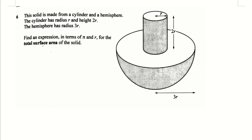Next, question number 6. This solid is made from a cylinder and a hemisphere. The cylinder has radius r and height 2r. The hemisphere has radius 3r. So there are a couple of different radii — we must make sure we use the correct one. Everything is in terms of r, so we can simplify into one single expression.